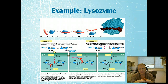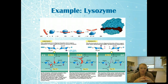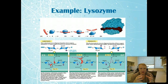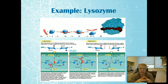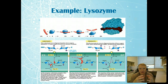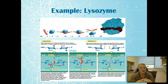Let's look at an example of how enzymes function — in this case, lysozyme, which is responsible for breaking down carbohydrates. First, the substrate plus the enzyme come together to form the ES complex. Once the enzyme starts breaking down the substrate, that becomes the EP (enzyme plus product), which then separates into the E and P — enzyme and product.